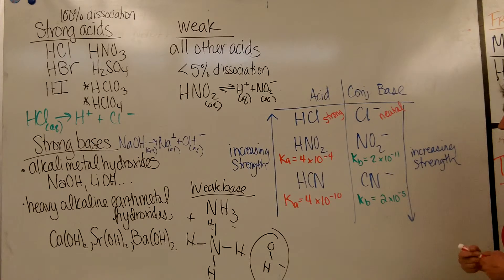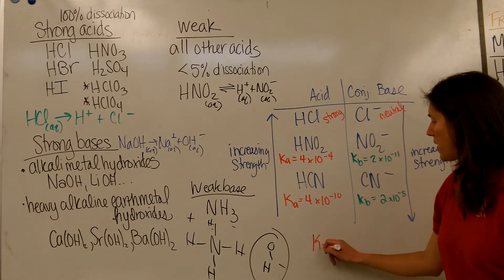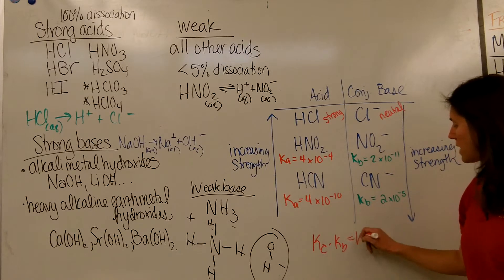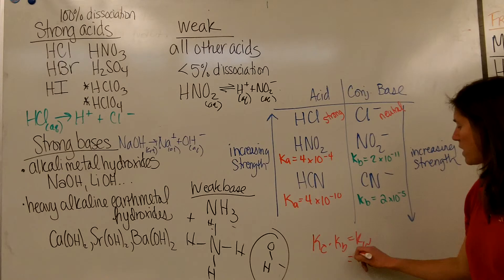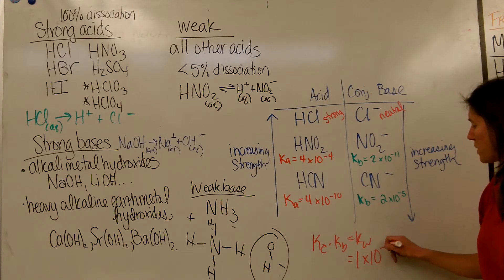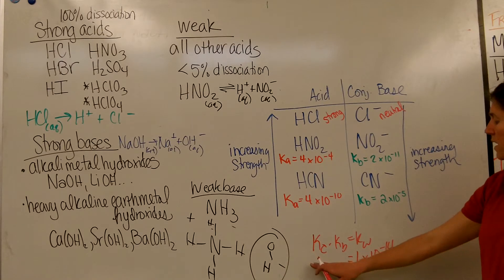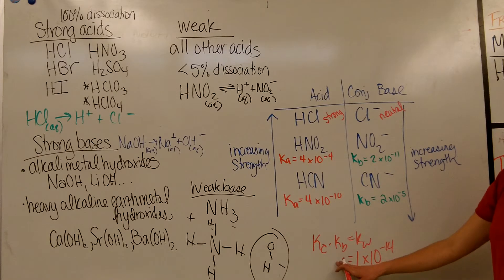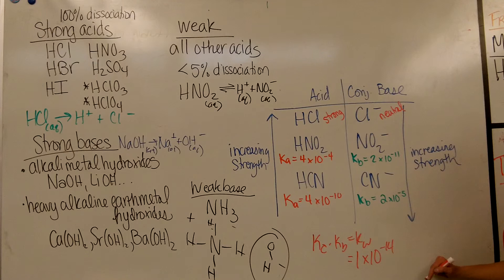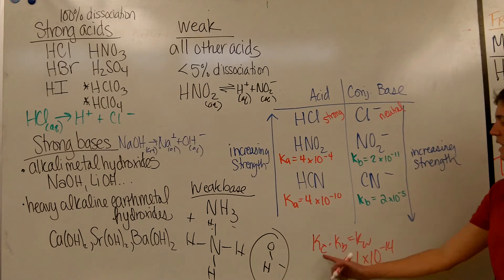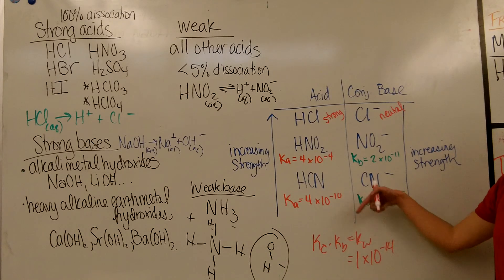And a related concept is, there's this equation, KA times KB equals KW. KW is the dissociation constant for water, it's 1×10^-14. And this works for a, if you take an acid and its conjugate base pair, their K-values, when you multiply them, you'll get KW. So you can try multiplying these together, you'll notice you'll get 10^-14.